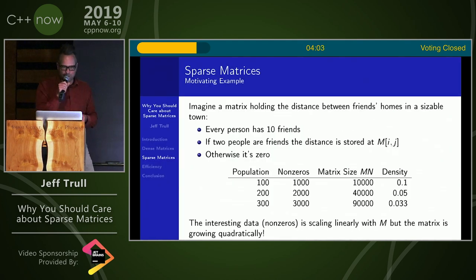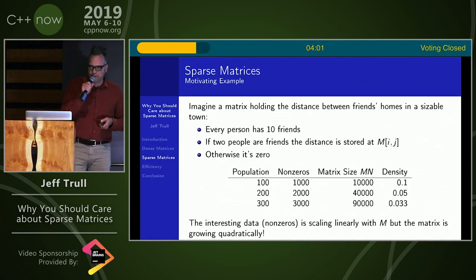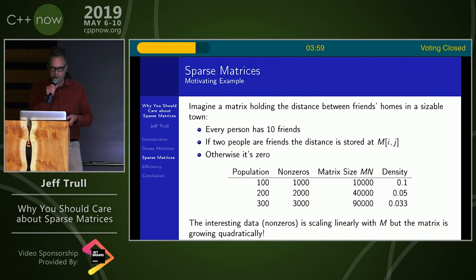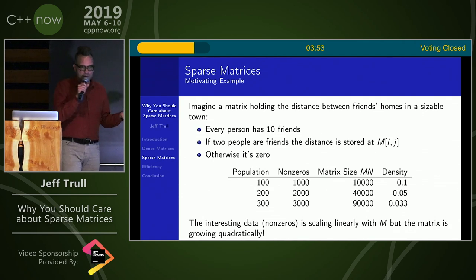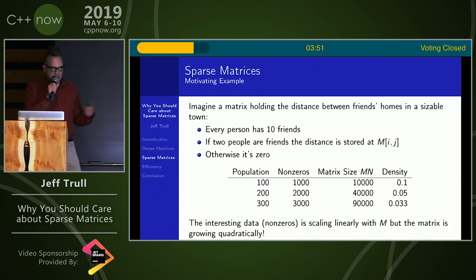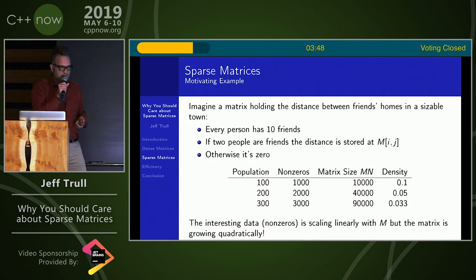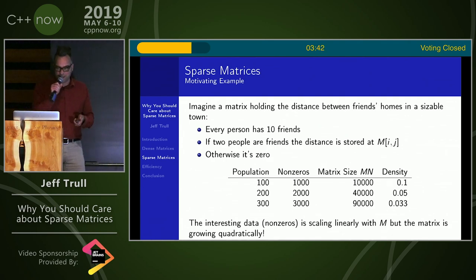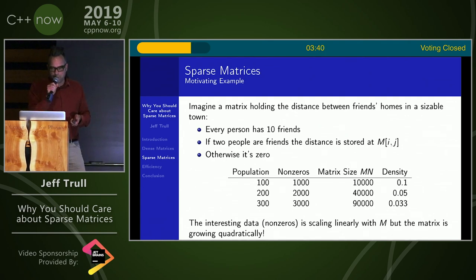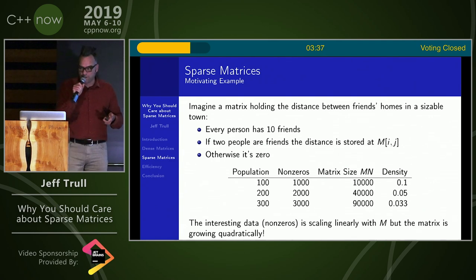Sparse matrices are a bit different. Consider a town where everyone has 10 friends, and if two people are friends, we record the distance between their homes in the matrix, and otherwise zero. If you look at how that matrix scales with the population, the size of the matrix is going up quadratically, while the number of actually interesting information stored is going up linearly.